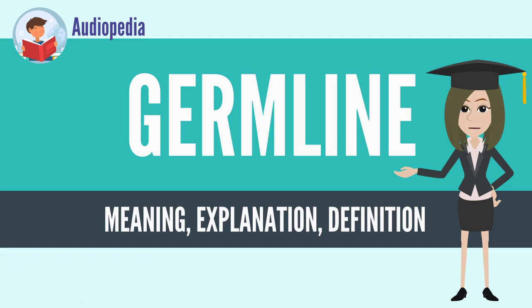In an earlier stage of genetic thinking, the distinction between germline and somatic cell was clear cut. For example, August Weismann proposed and pointed out that the germline cell is immortal in the sense that it is part of a lineage that has reproduced indefinitely since the beginning of life and, barring accident, could continue doing so indefinitely.